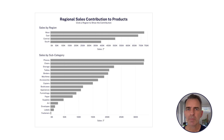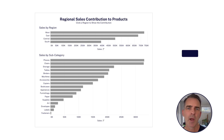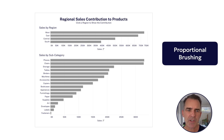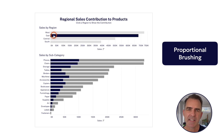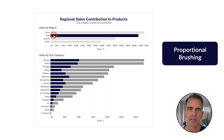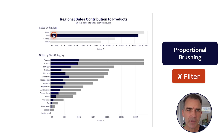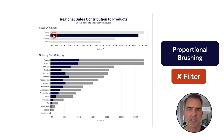Here I have sales by region and sales by subcategory. Proportional brushing allows me to click on one region and see the contribution that that region makes up of my subcategories. It doesn't filter — it tells me the contribution.